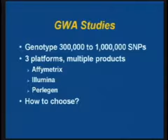As the products have changed, we've gone from doing small numbers of SNPs to now very large numbers of SNPs. In GWAS studies, you could be genotyping 300,000 to a million SNPs. There are at least three platforms to choose from, with multiple products for these platforms, so how do you choose?